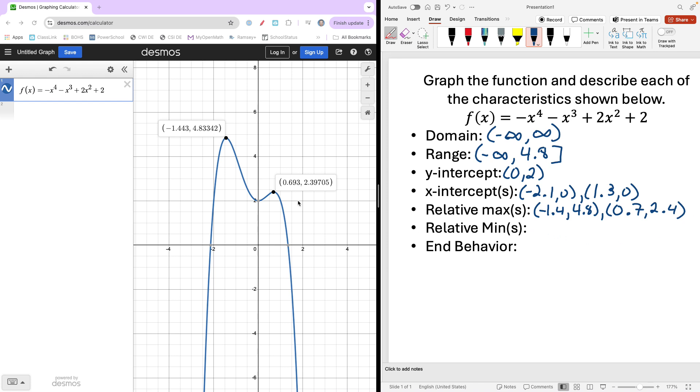And for relative min, the lowest points that we see, there's just one of those and it happens to be our y-intercept as well. That's just coincidental. Certainly don't count on that happening. And so that is (0, 2) is our relative min. There's only one of those.